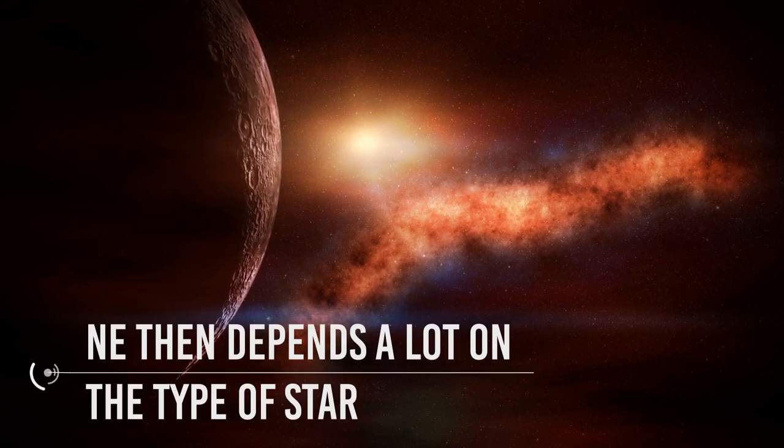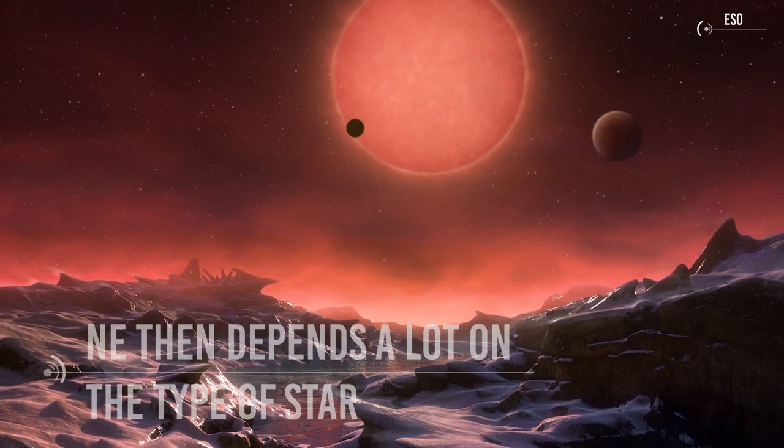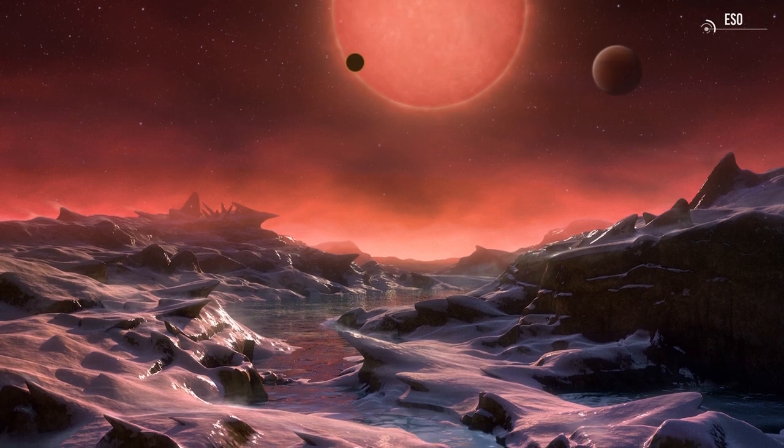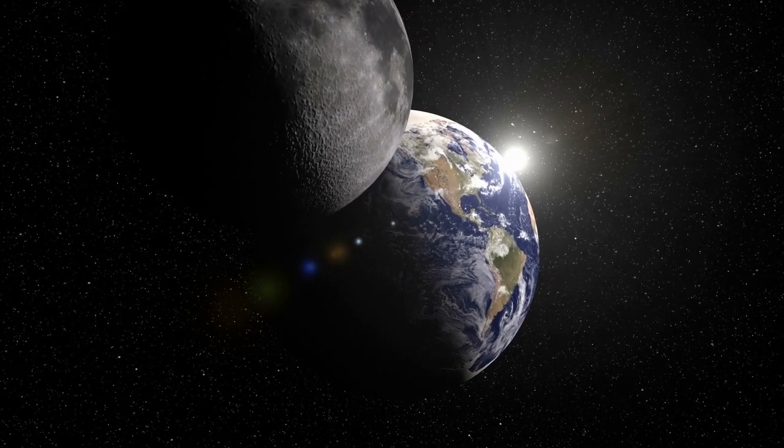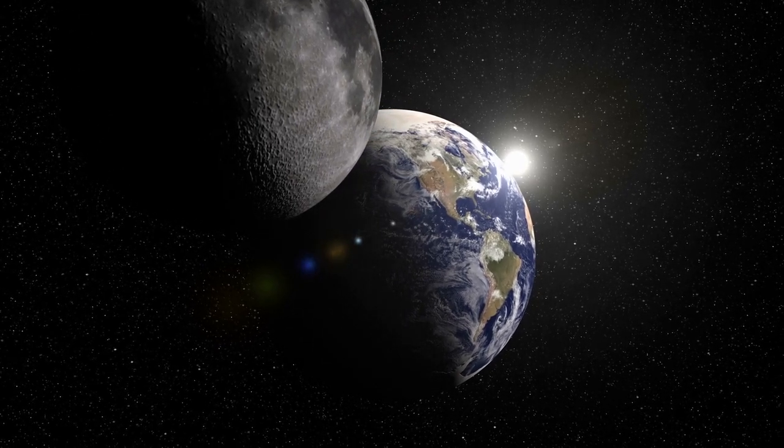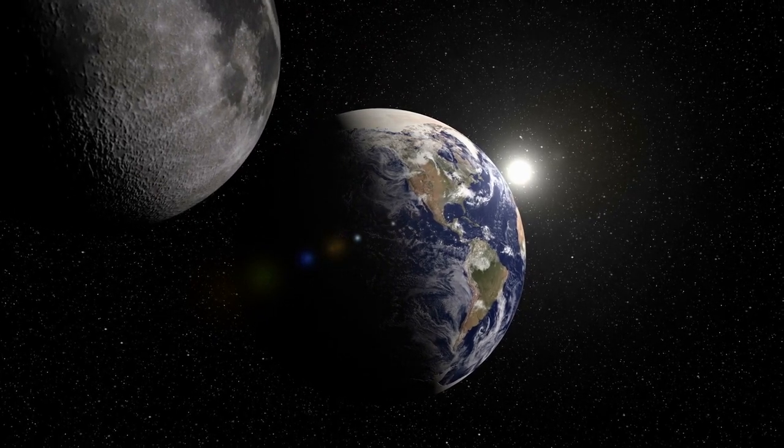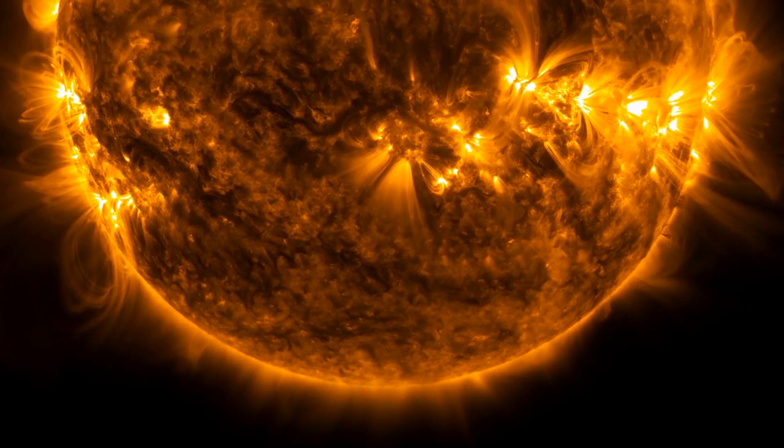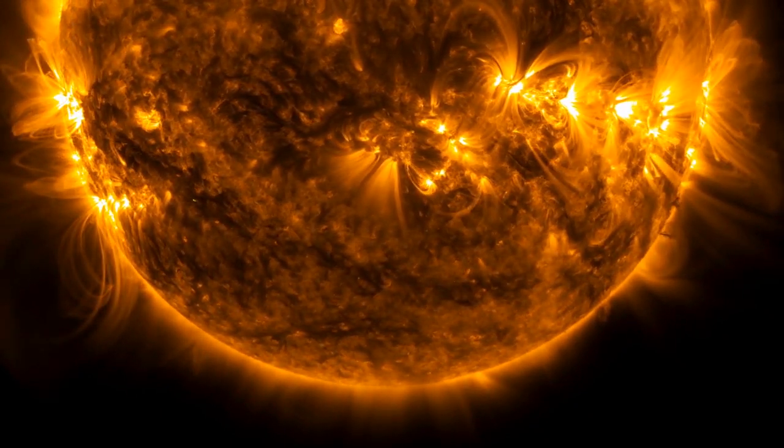N E then depends a lot on the type of star. The small and cold ones have a very narrow and close habitable zone and therefore the useful planets should huddle close to them. But in this case the tidal force would block them like the moon with the Earth, and they would be destined to always show the same face to the central star with obvious dramatic consequences. Giant stars give more space but live much less, and so on. Each star has its own problems of urbanization.